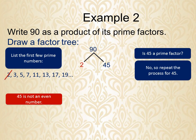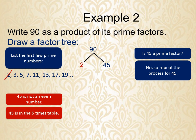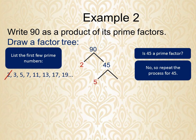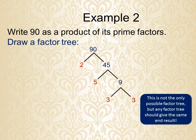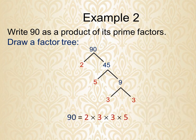So we think: in which table does 45 appear? 45 is in the five times table. 5 × 9 = 45. And 9 = 3 × 3. This is not the only possible factor tree, but any factor tree should give the same end result. So 90 = 2 × 3 × 3 × 5. Let's verify: 2 × 3 = 6, 6 × 3 = 18, 18 × 5 = 90.